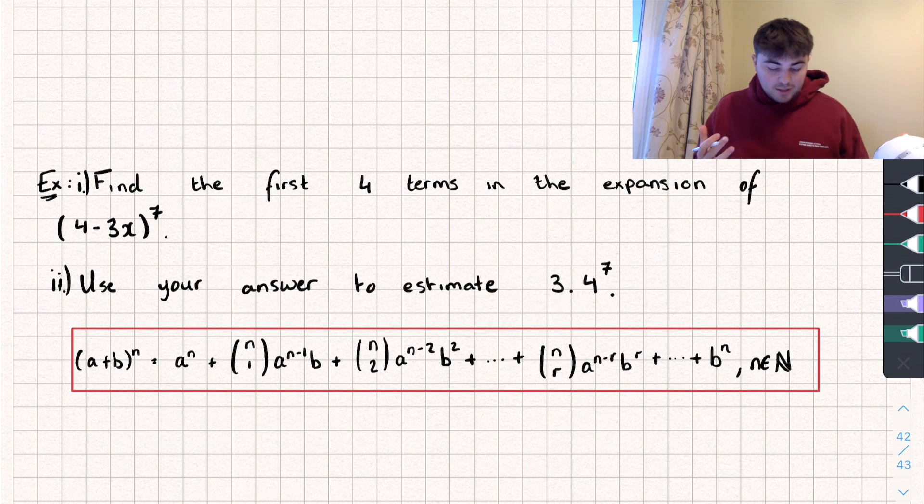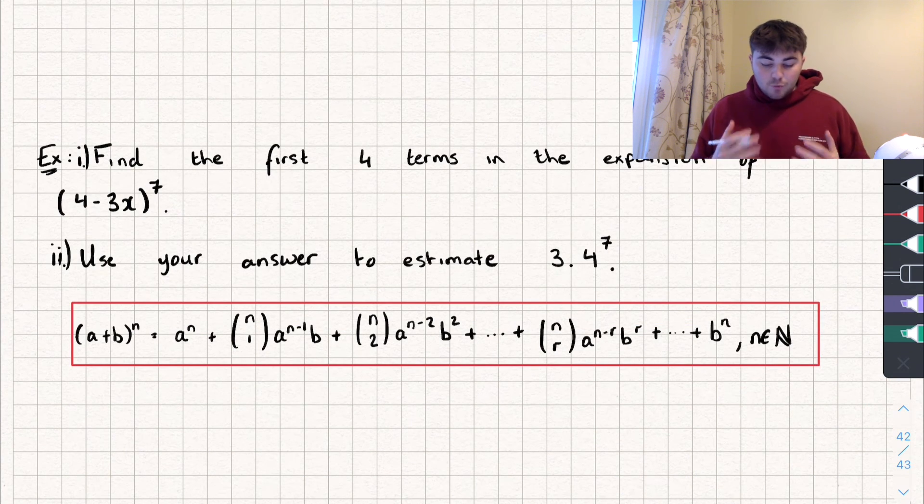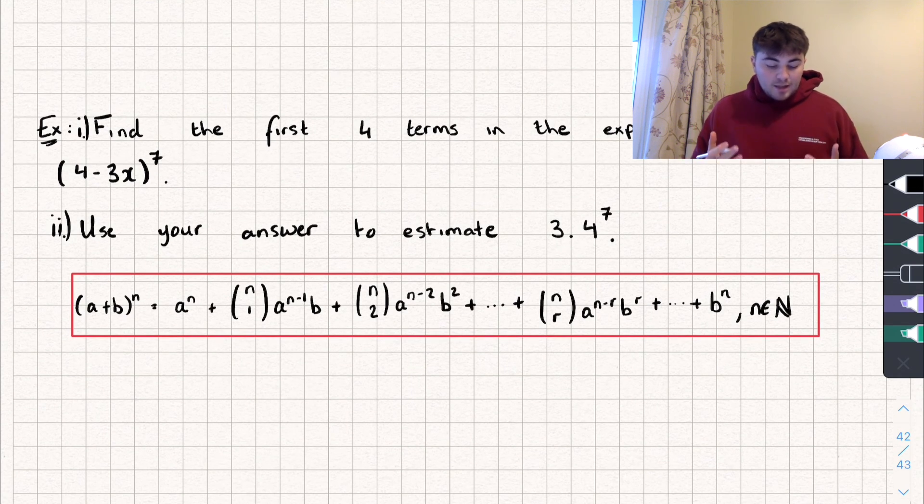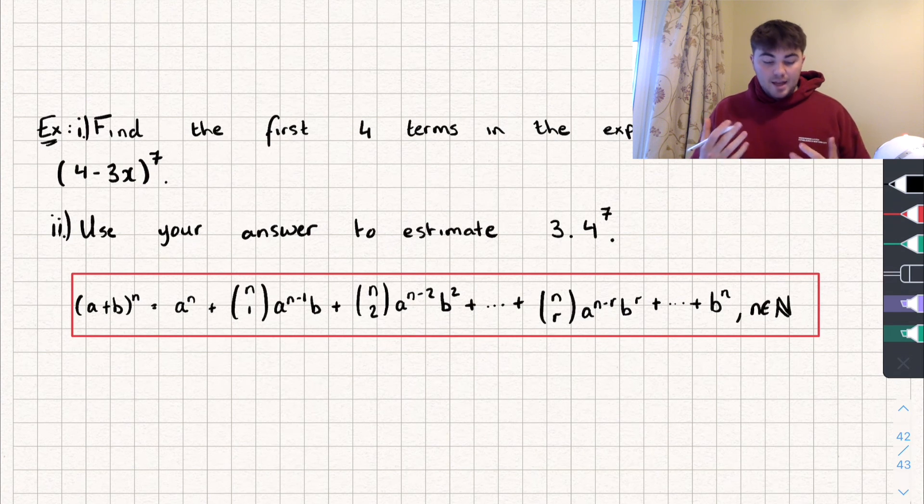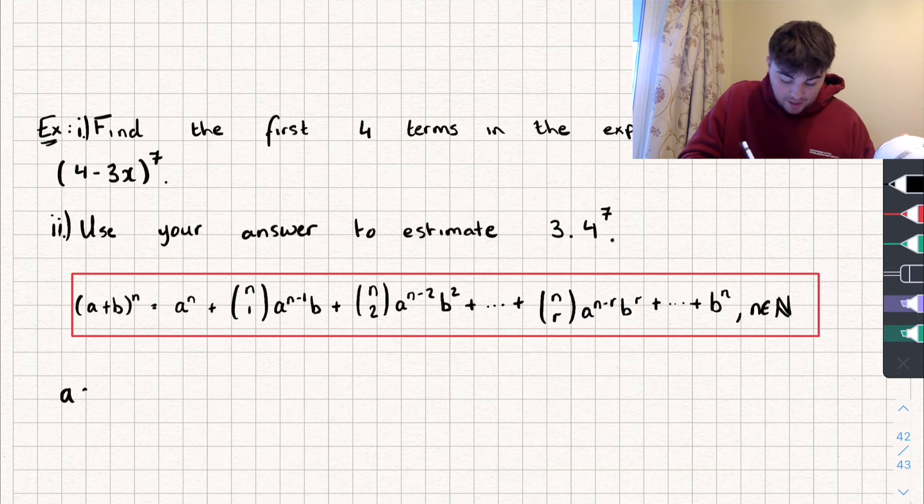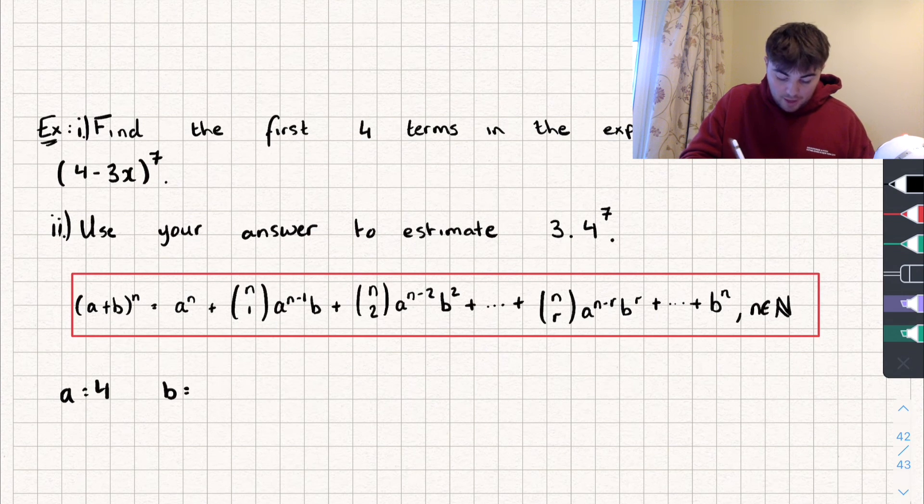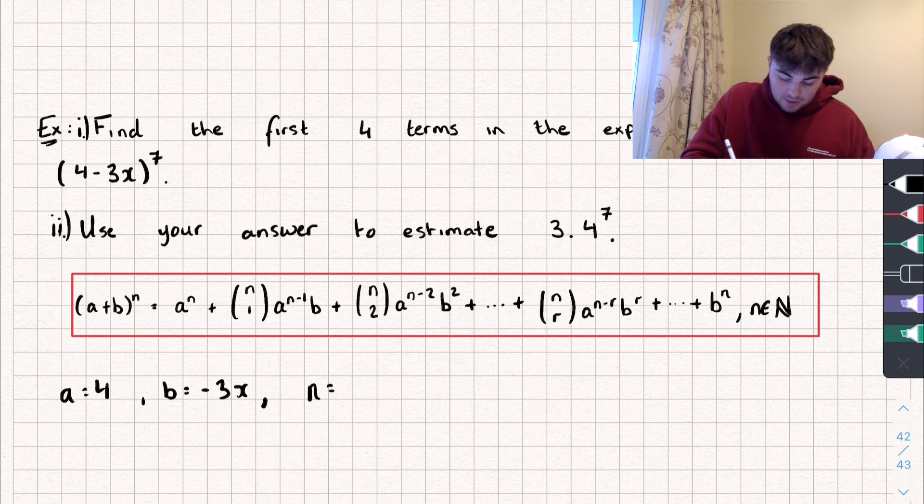So this is the first example. It says find the first four terms in the expansion of 4 minus 3x all to the power of 7. So in that example there, our value of A is going to be equal to 4, so we can say A is equal to 4. Our value of B is equal to negative 3x, and our value of n is going to be equal to 7.